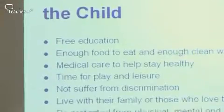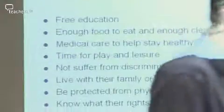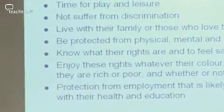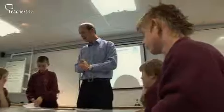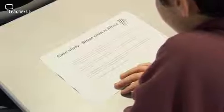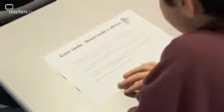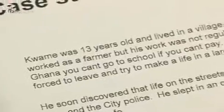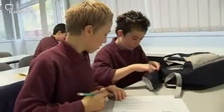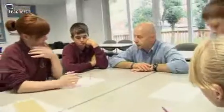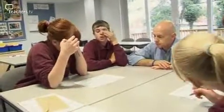Jamie introduces the Convention on the Rights of the Child: 'These are examples of children's rights, written down in the Convention of the Rights of the Child. The question is: are these rights always carried out for children?' Students are given a case study — a real-life account of a street child in Africa called Kwame — and asked to read carefully and find where Kwame is not getting some of these rights. The case study was important for students to understand not just what rights are, but where in the world rights are being abused.